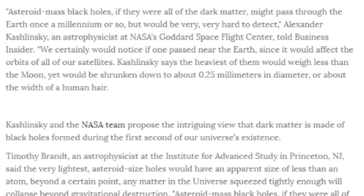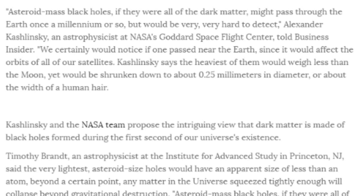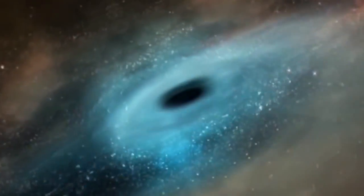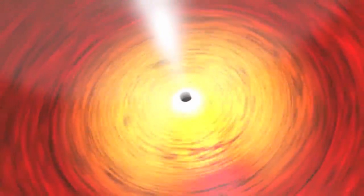Kashlinsky said the heaviest of them would weigh less than the Moon, yet would be shrunken down to 0.25 millimeters in diameter, or about the width of a human hair. No way! Didn't that happen on the Brady Bunch episode? They had a shrunken head black hole or something and then Marcia started doing it with the Kool-Aid man. Maybe that was a dream I had, scary dream.